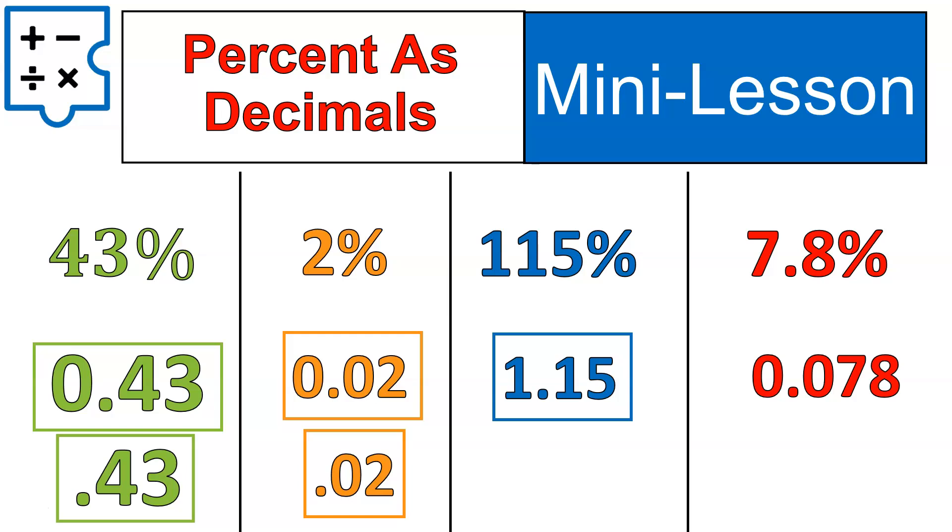7.8% would be 0.078, and that can be written without the zero on the left of the decimal. There we go. Here are several different percent to decimal conversions. Just a quick refresher. Hopefully we're pretty good at this moving in, but I did want to review it because you will need this skill moving into all of the question types we're going to look at.